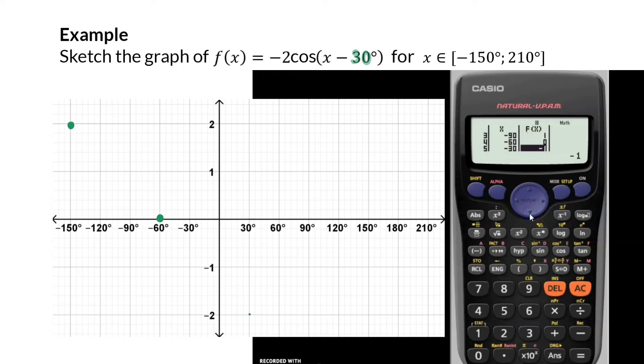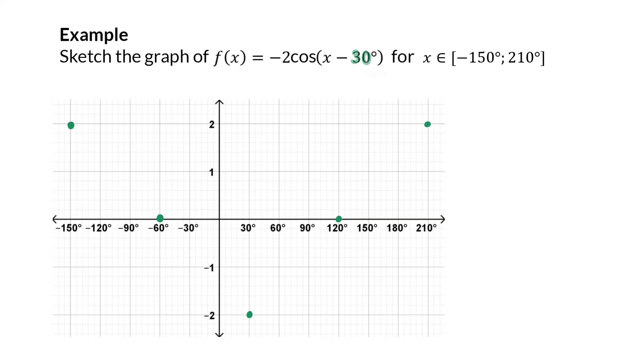The graph then moves down and has a minimum value which will be a turning point at (30, -2). And then turns upward again, and the next important point will be the x-intercept at 120. And lastly, as it moves up, the final coordinate is also the turning point at (210, 2).